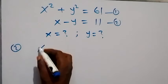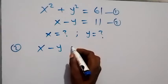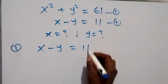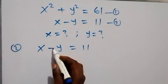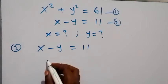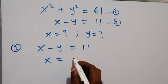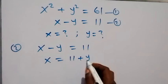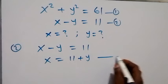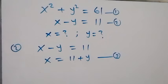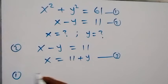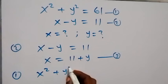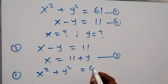From equation two we have x minus y equals 11. Let's take minus y to the other side, and this becomes x equals 11 plus y. Let this be equation three. From equation one, what we have is x squared plus y squared equals 61.